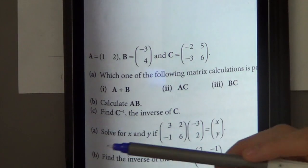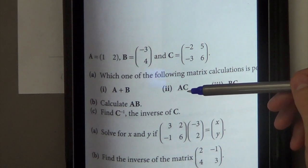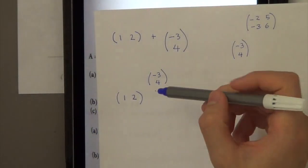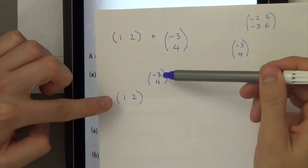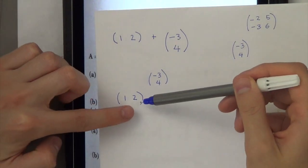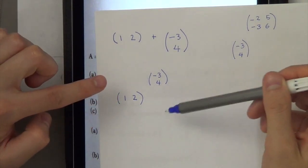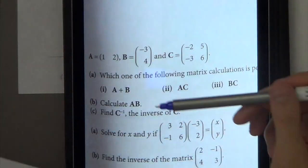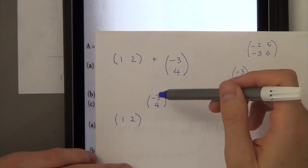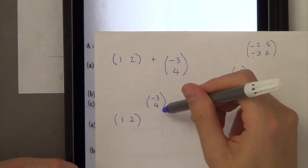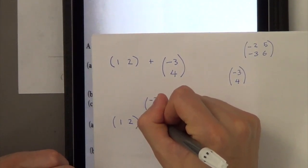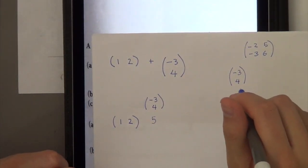The next one says A dot C, or A multiplied by C. This one is possible, because you would need to do 1 times minus 3 plus 2 times 4, and put your answer there. So minus 3 plus 8 is 5. The answer is 5.